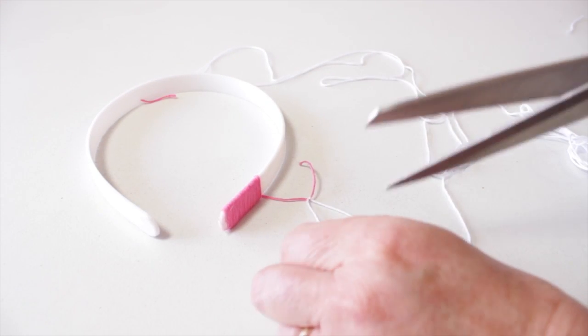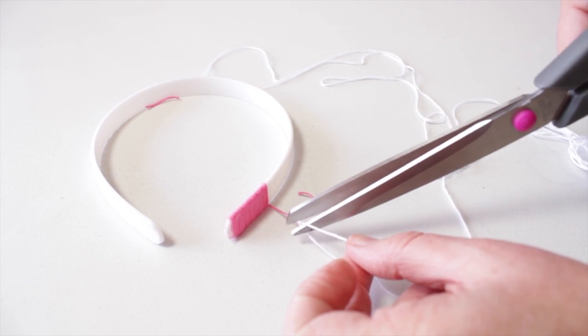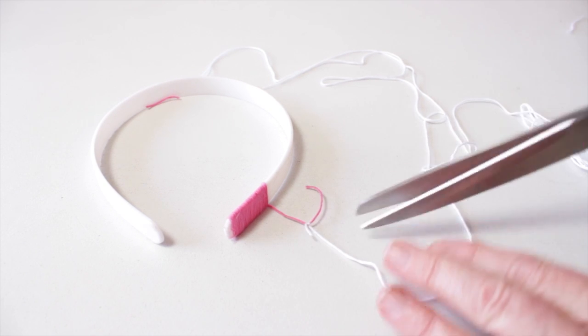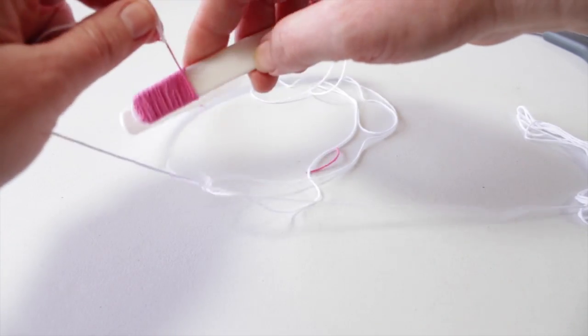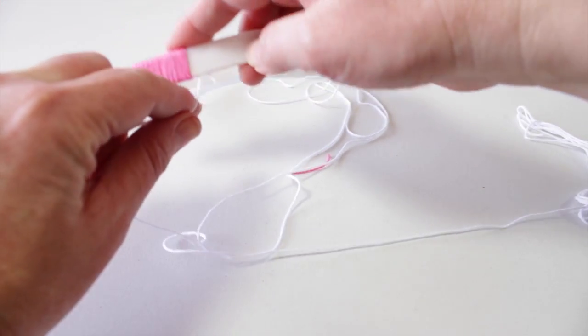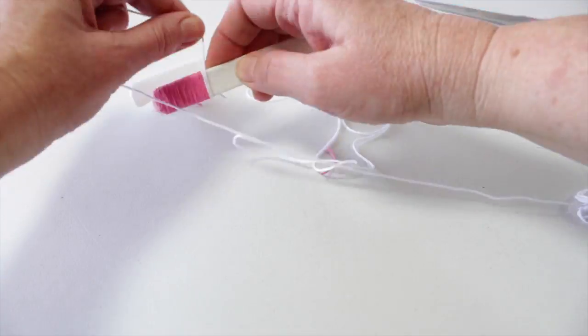To add another color, tie the two threads together and cut off the loose ends. Try and keep the knots you've made on the inside of the headband to make it neat. Keep winding the thread around the headband.